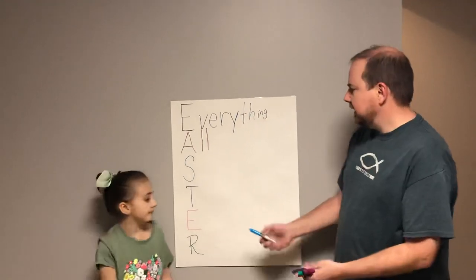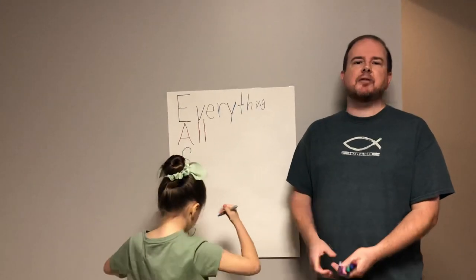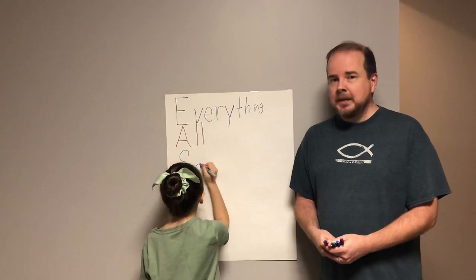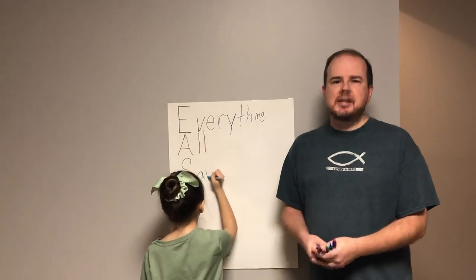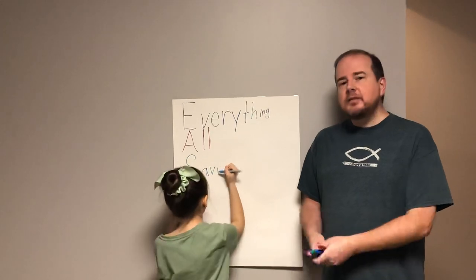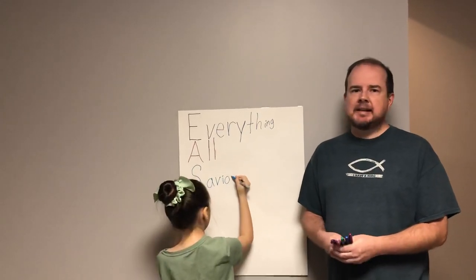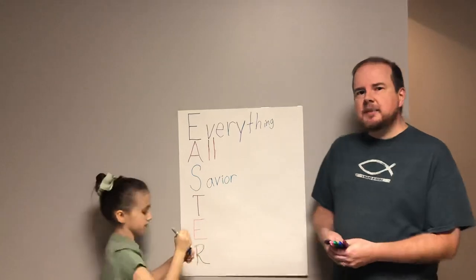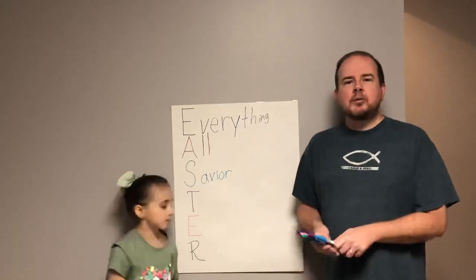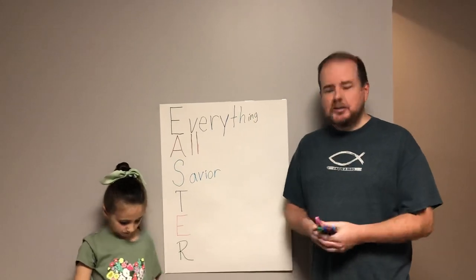The next letter is the letter S. S is for Savior. God had a plan. God sent his only son, Jesus, to be born as a baby in Bethlehem. He lived on this earth and he lived a perfect life. He didn't sin. God sent Jesus to be our Savior. Jesus died on the cross for our sins. Only he could do that.